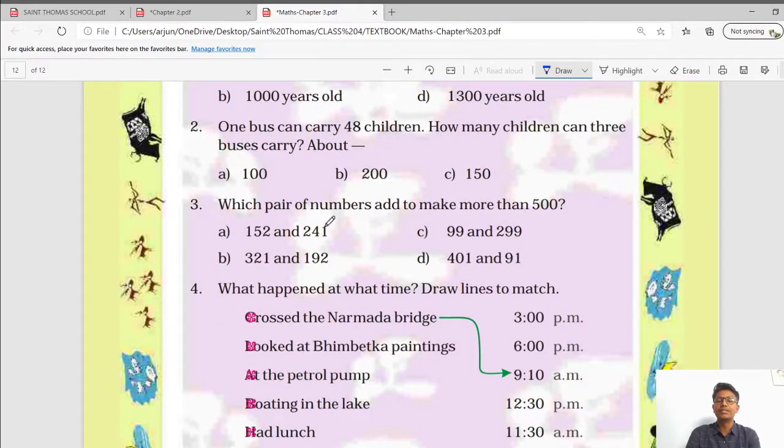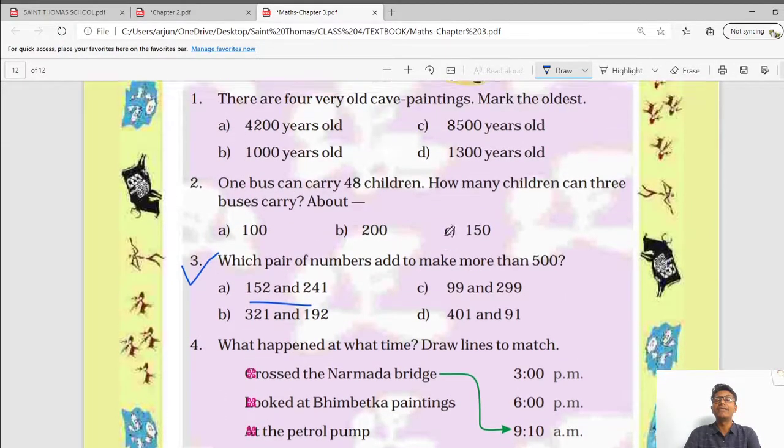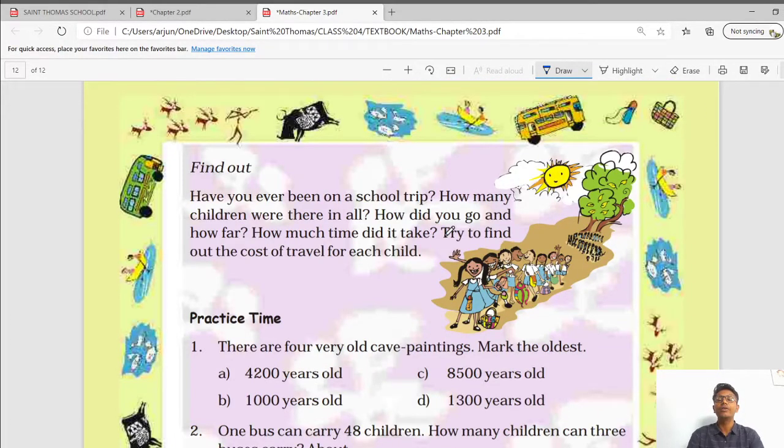This type of question can be asked. Which pair of numbers add to make more than 500? In this what you have to do? You have to simply add up all the number and see which makes a pair of more than 500. Here we end our lecture. All the best for your unit test exam. Thank you.